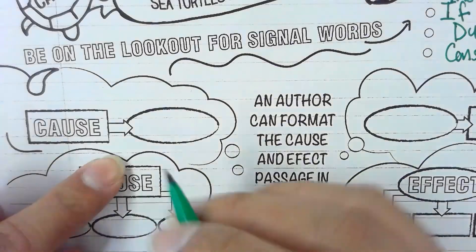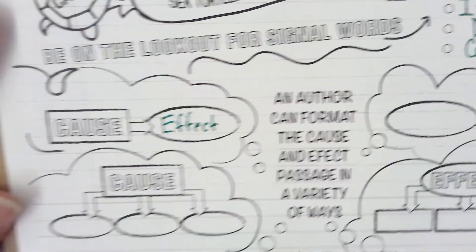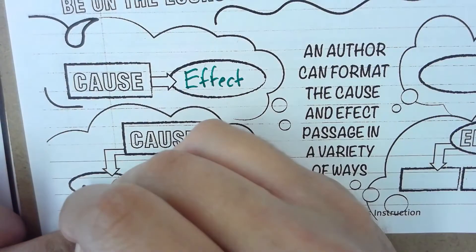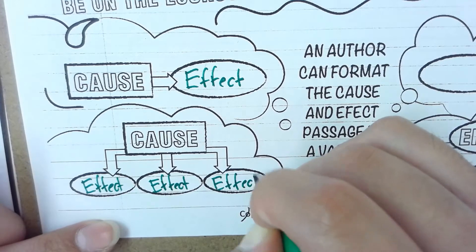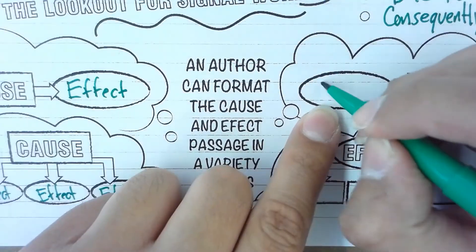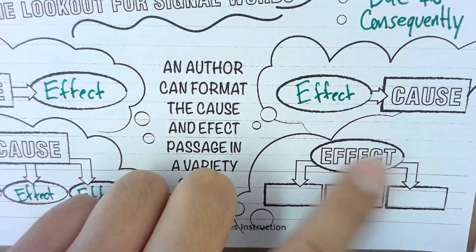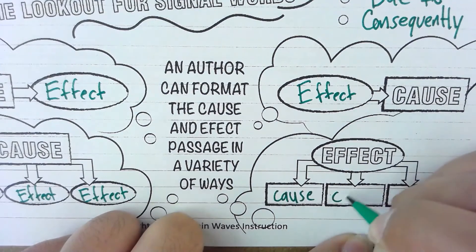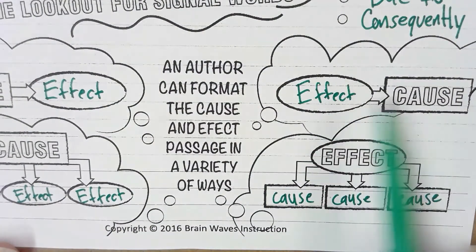An author can format the cause and effect passage in a variety of ways. We can have our cause then one effect, or we can have our cause and three effects — three things that happen. Or we can have the effect given first and then the cause, or the effect and then three causes. So the effect is what happened, and why did it happen.